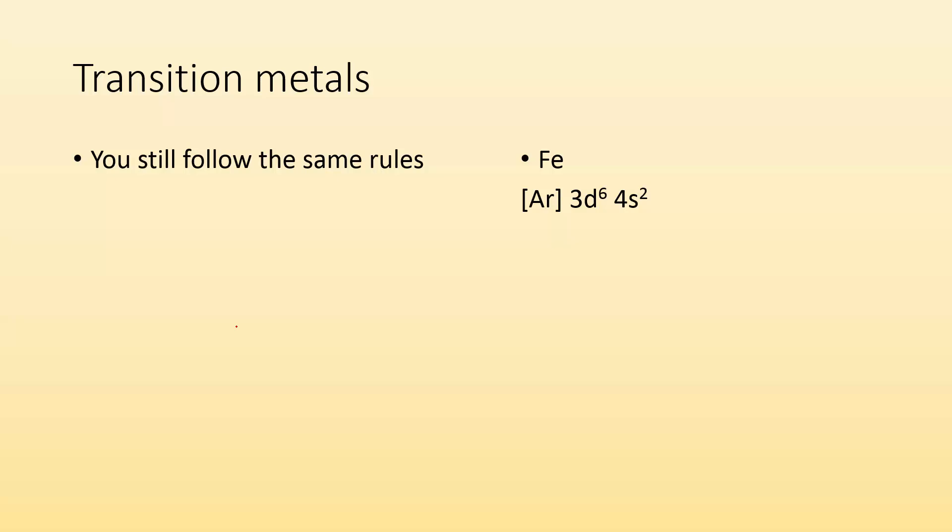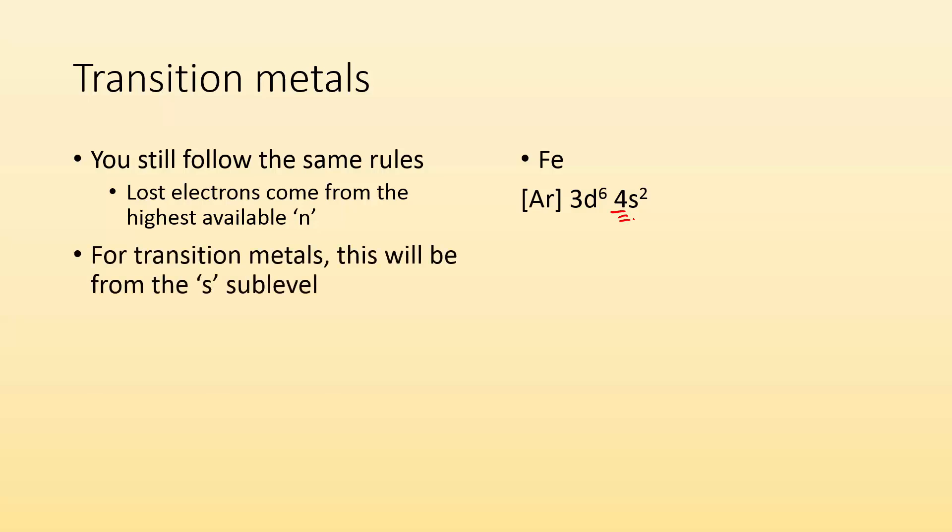So we have iron. Its configuration would be Ar 3d6, 4s2. So the lost electrons are going to come from the highest available n, or the highest principal energy level that has an electron. So for Fe, it's going to be this 4s, right? It's the highest n number.